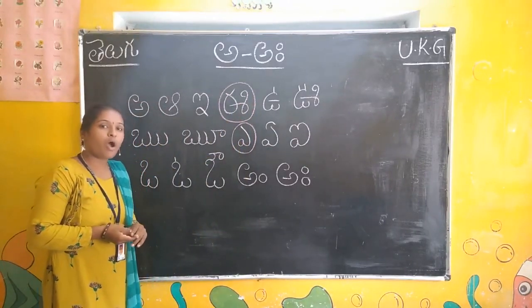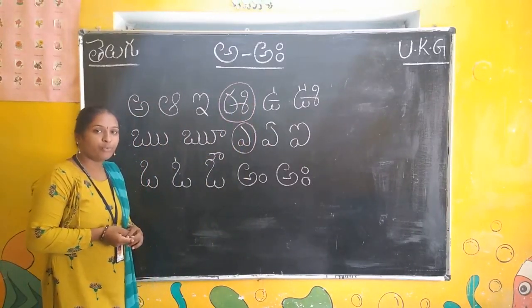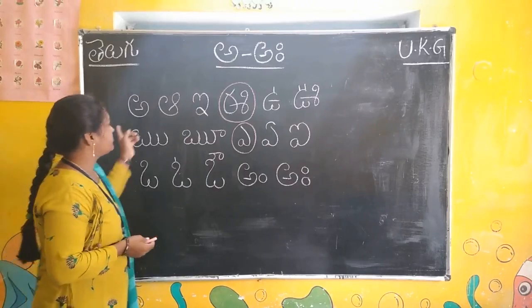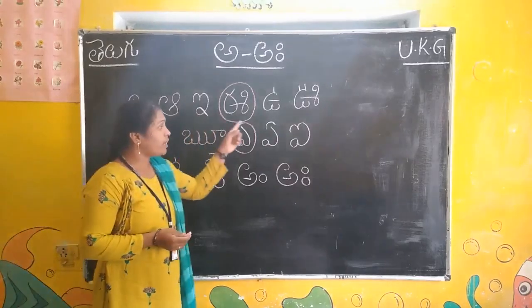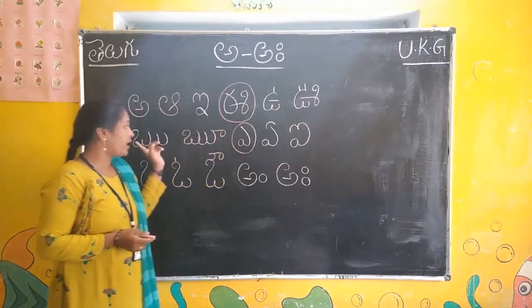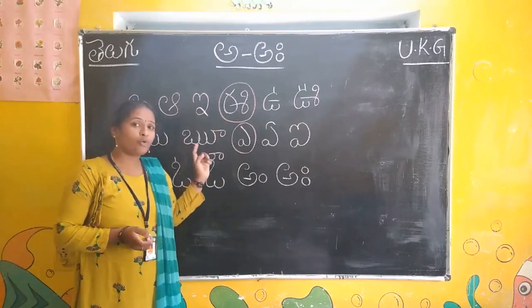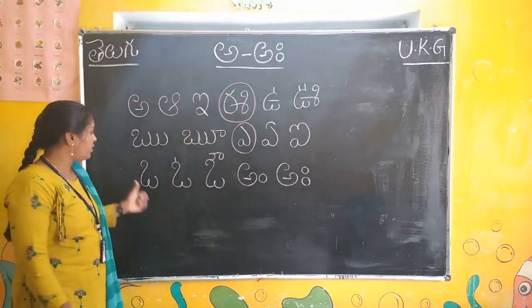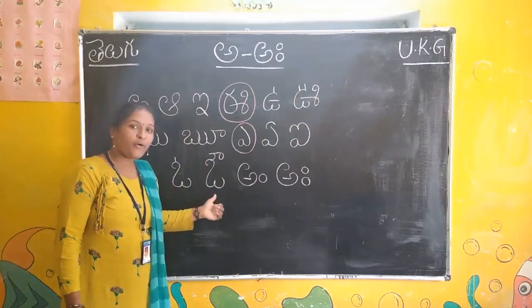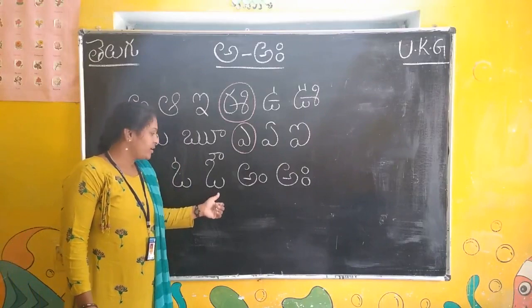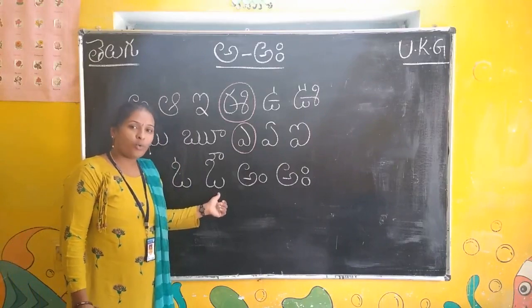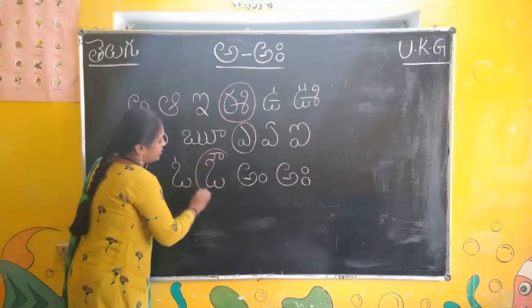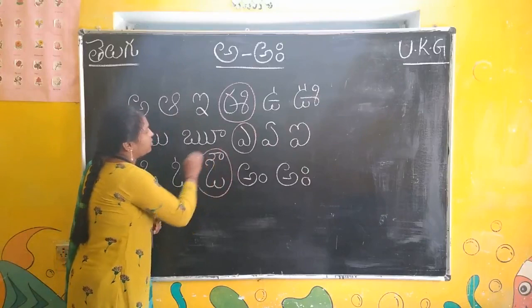Ao. Ao, ao sha damu. Here is ao, wao sha dam. The letter says ao, wao sha damu. Here is ao. Ao sha damu. Very good.